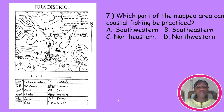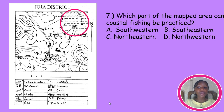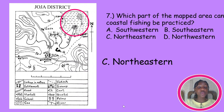Which part of the mapped area can coastal fishing be practiced? Coastal fishing is still fishing, so where do you expect people to catch fish? It would be an area close to the sea, located in the northeastern portion of the map. The question could also have come as: which settlements engage in coastal fishing? All we have to do is identify those settlements close to the sea, which would be Kako and MoMA.